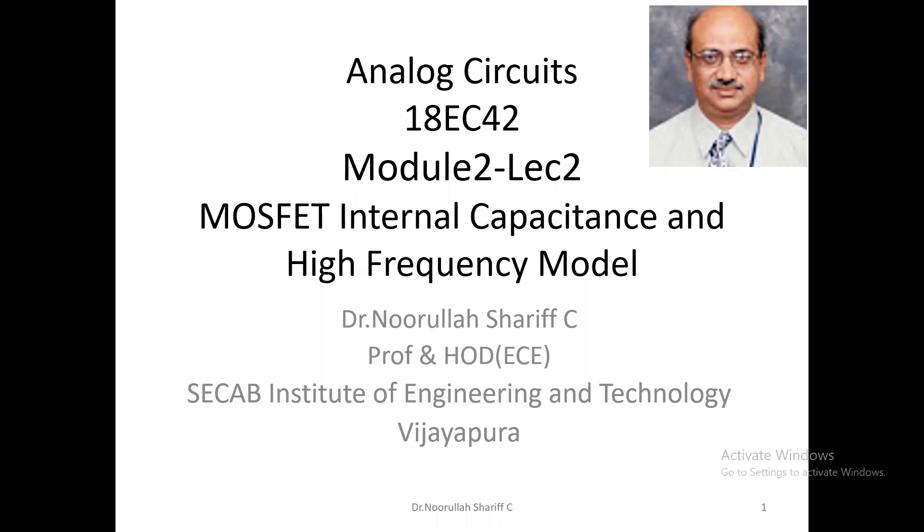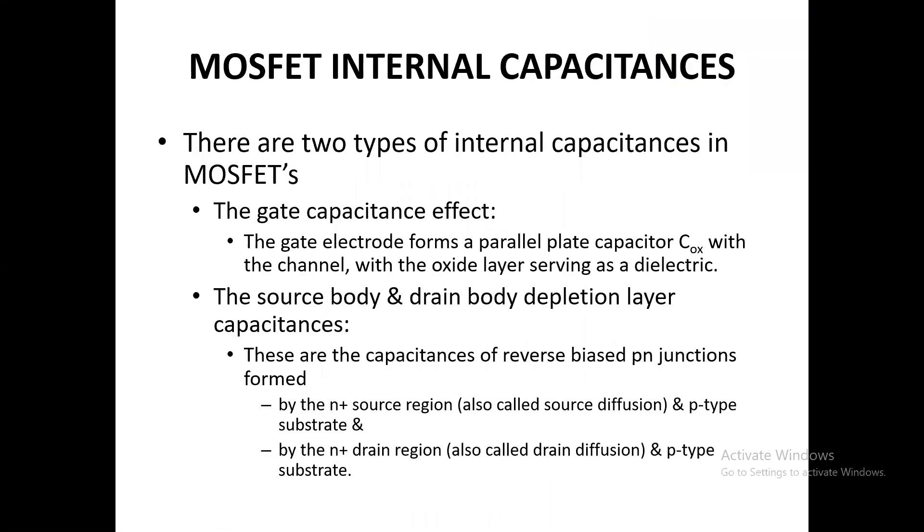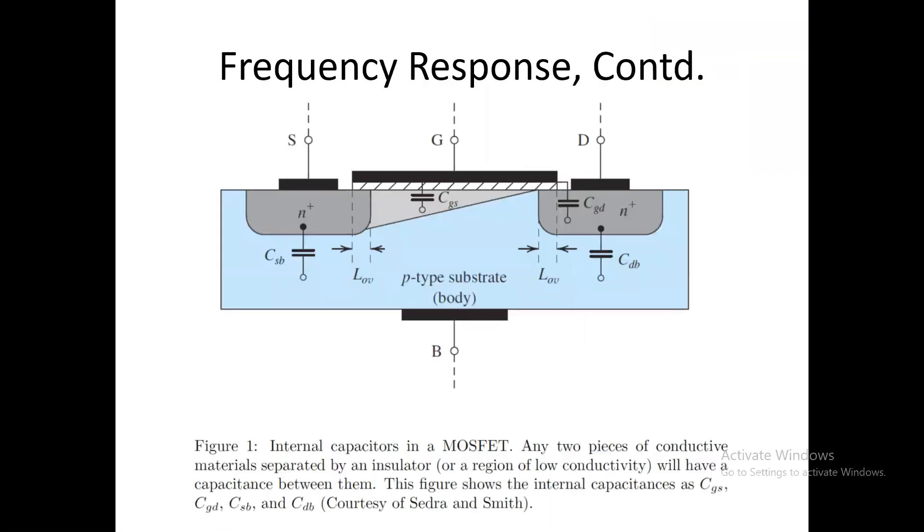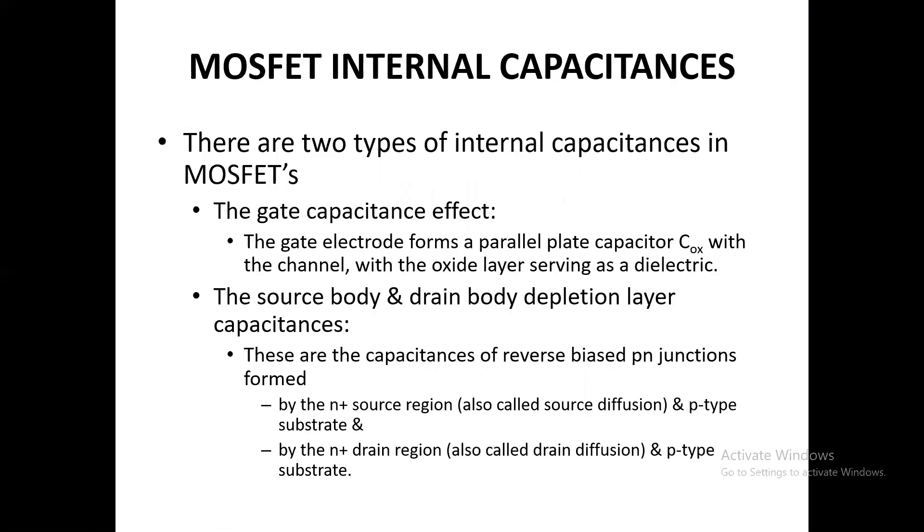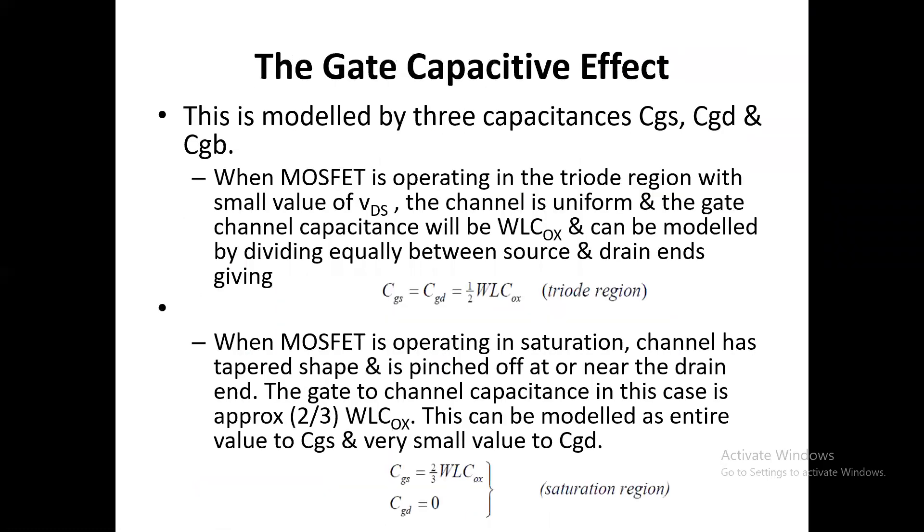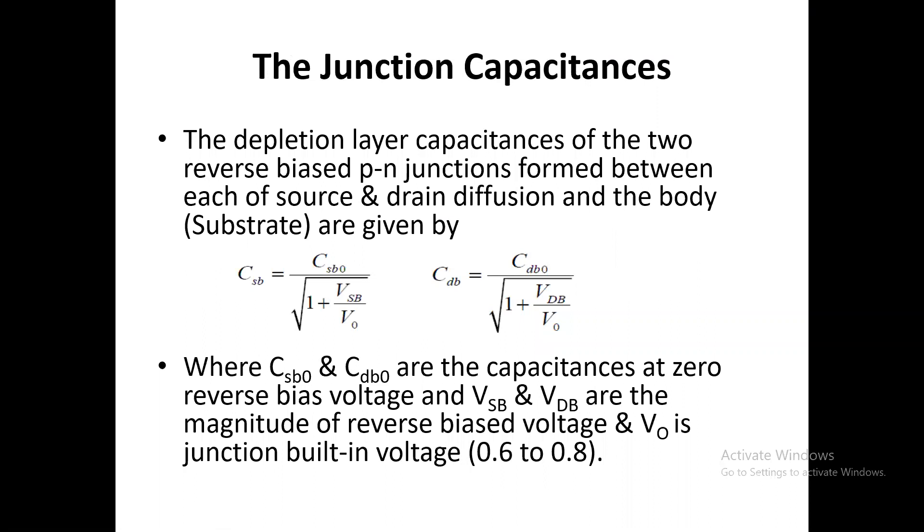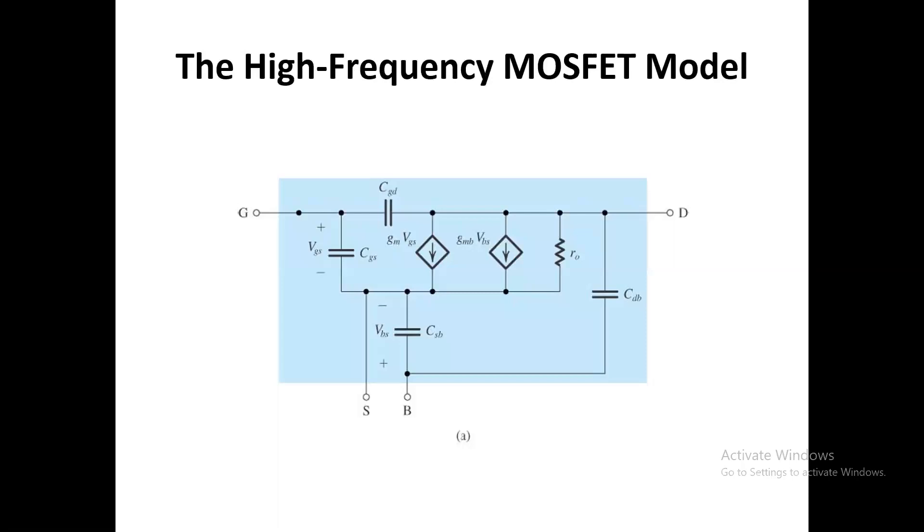In the last lecture we considered the MOSFET internal capacitance, where we discussed two types: one is the gate capacitor effect, the second is the junction capacitance. Now we will be seeing the high frequency model.